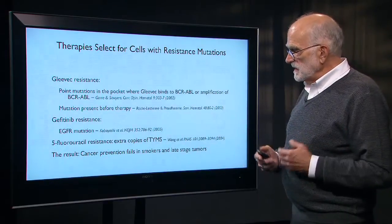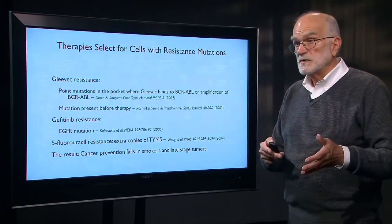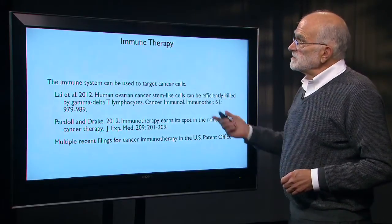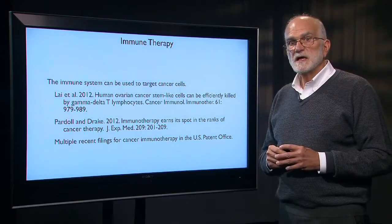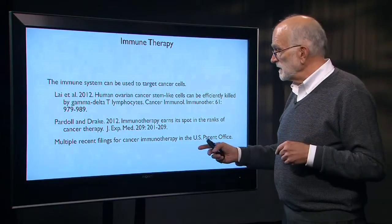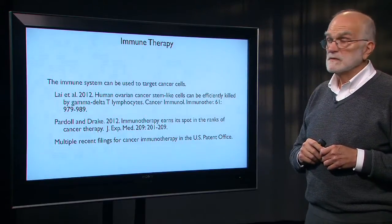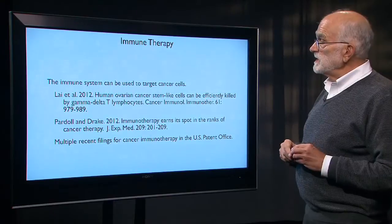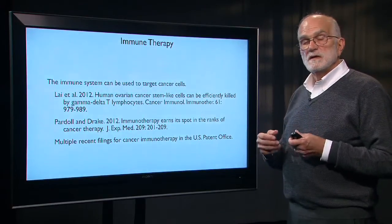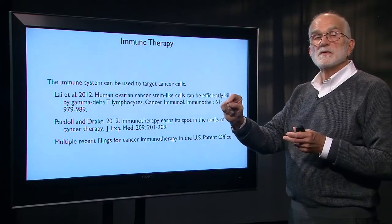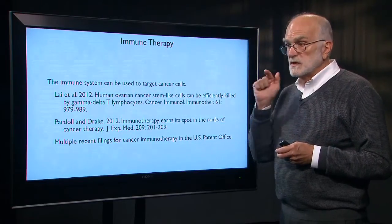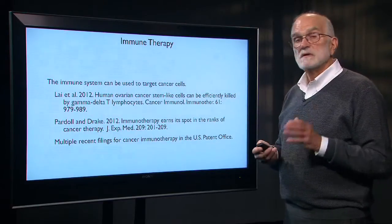Essentially, cancer prevention fails in smokers who are accumulating many mutations, and fails in late-stage tumors, which are genetically quite heterogeneous. One possibility is immune therapy: the immune system itself can be used to target cancer cells. Immune cells are taken out of the body, selected to be those that attack a particular tumor, and that immune clone is magnified so that a large amount of immunoglobulin can be produced and injected back into the patient. This is starting to show some promise.